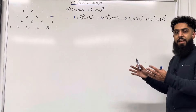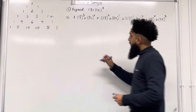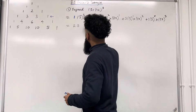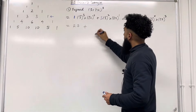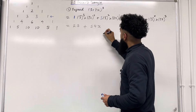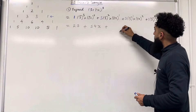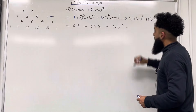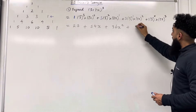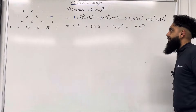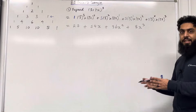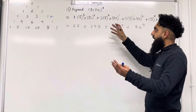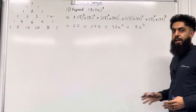So now we simply simplify each term. The 1st term becomes 27, plus the 2nd term becomes 54x, plus the 3rd term becomes 36x squared, plus the 4th term becomes 8x cubed. And that is the expansion of (3 + 2x)³ using Pascal's Triangle.